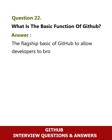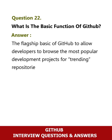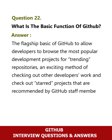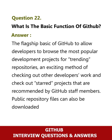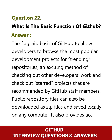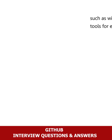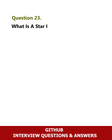Question 22: What is the basic function of GitHub? Answer: The flagship basic function of GitHub is to allow developers to browse the most popular development projects and trending repositories. It provides an exciting method of checking out other developers' work and starter projects recommended by GitHub staff. Public repository files can also be downloaded as zip files and saved locally. It also provides access control and collaboration features such as wikis and basic task management tools for every project.